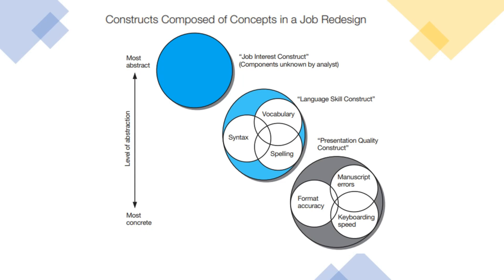Here we started with the three concepts for the profile of technical writing. Job interest is a construct, language skill is another construct, and presentation quality is also a construct. These constructs are further divided into smaller characteristics — for example, vocabulary, syntax and spelling in case of language. Presentation quality as a construct is further divided into manuscript errors, keyboarding speed and format accuracy. So constructs are the smaller forms of concepts.